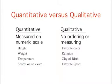Quantitative variables are distinguished from categorical variables, such as favorite color, religion, city of birth, and favorite sport, in which there is no ordering or measuring involved. Categorical variables are sometimes called qualitative variables.